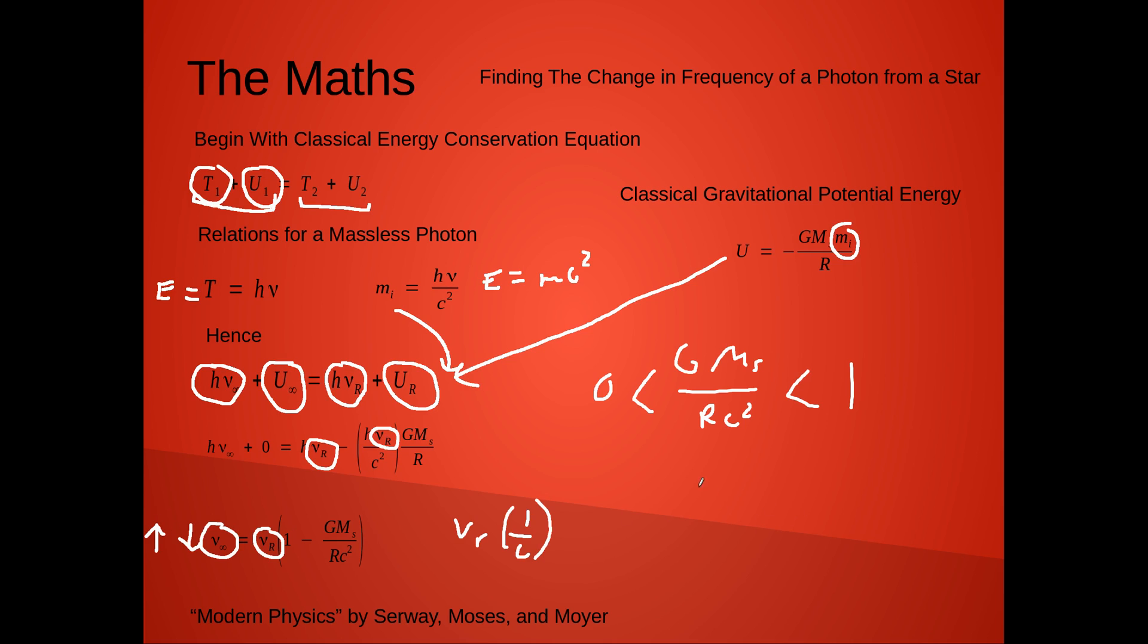However, a fun thing to note here is if GM_s over rc squared becomes greater than 1, then this term here will actually become negative. Now, our frequency will actually not go negative, but what it's stating is that the potential energy at infinity is greater than the energy the photon had to begin with, which means this star is actually a black hole, because the photon does not have enough energy to escape to a certain radius.